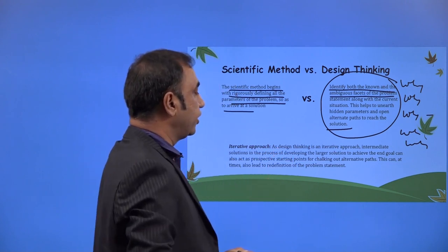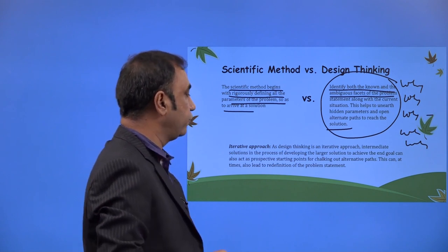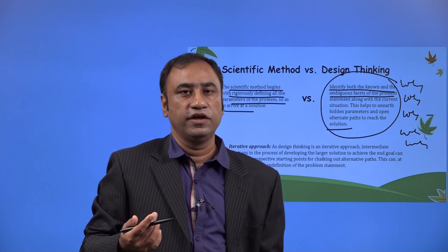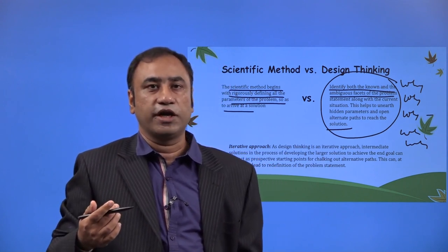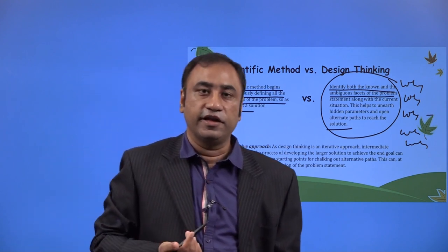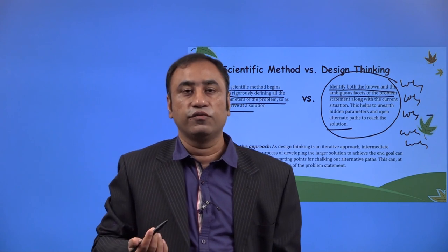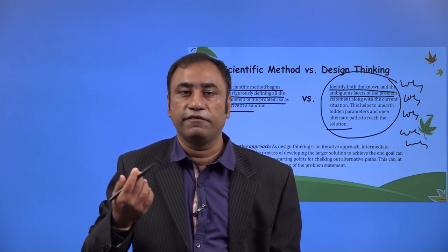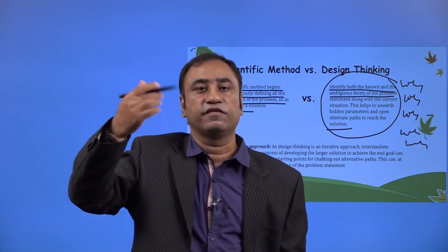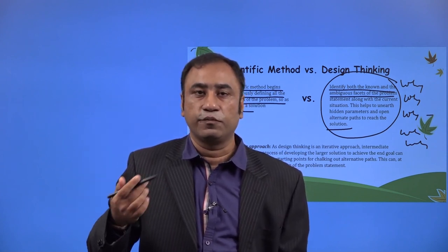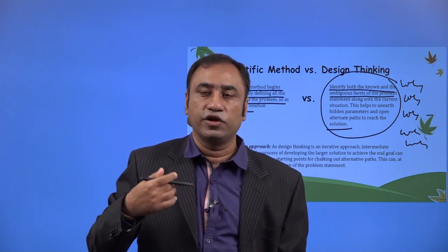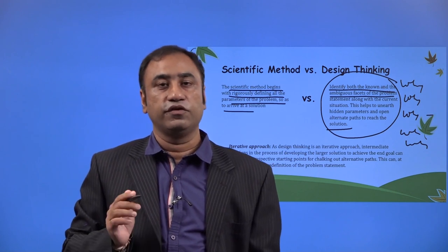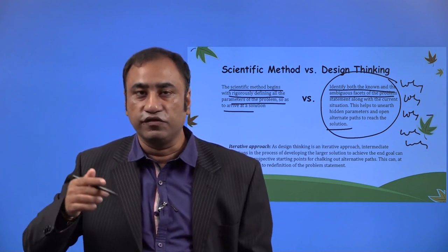Design thinking is an iterative approach — intermediate solutions in the process of developing the larger solution can also act as a prospective starting point. The product might not be complete always because it goes into the market, takes feedback from the people it is solving a problem for, and then comes back to start the same cycle again. Design thinking is an iterative process — it takes market feedback, changes the product, and relaunches it based on customer feedback. It is not a one-time solution; it keeps on changing.